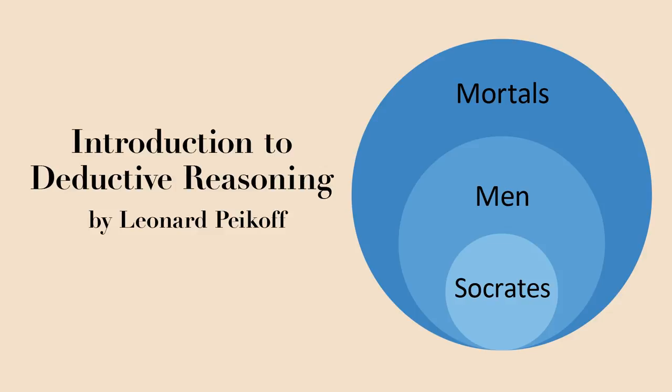Now, in turning to deductive reasoning, we first have to make a distinction between two independent questions — and these same two questions are applicable in inductive reasoning also. These two questions are the question of truth and the question of validity. The question of truth is simply: are the premises of the argument true? In other words, do they state facts? Do they describe things as they actually are? Do they correspond to reality?